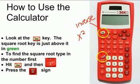You're going to hit second x squared to get the square root, and it's going to come up like this on your calculator. And then you're going to type in your number, and then you're going to type in equals. So that is how you find the square root on your calculator.